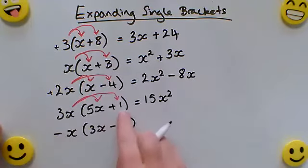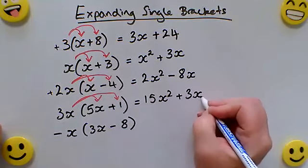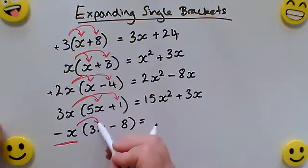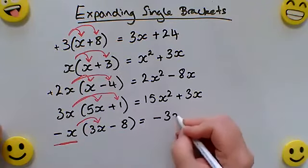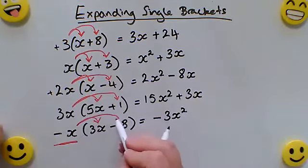3x times by plus one, that's just one lot of 3x. For the last example here, I've got a negative x. Negative x times 3x, and negative times a positive would give me negative 3x squared.